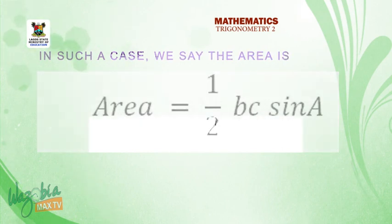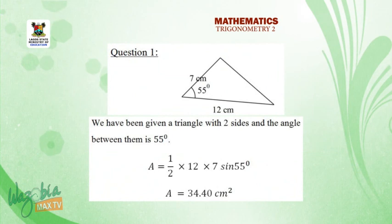So I have some question here. Question number one. We have been given a triangle and two sides have been given as 12 cm and 7 cm. And the angle between the two sides is given as 55 degree. So I have Area equals half 12 times 7 sine 55. And that will be 34.40 cm squared. You just have to apply your calculator there.